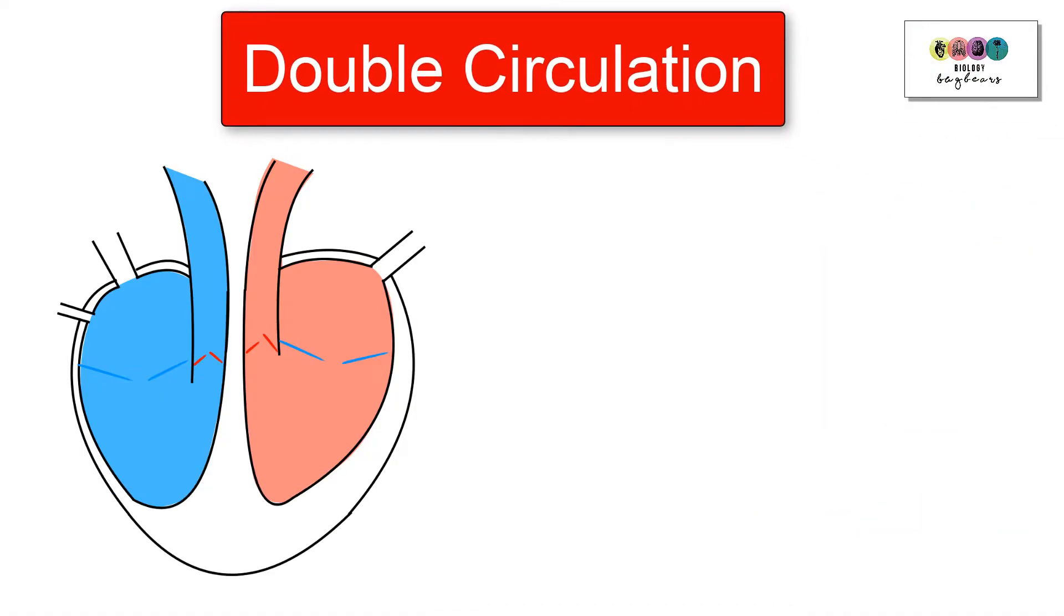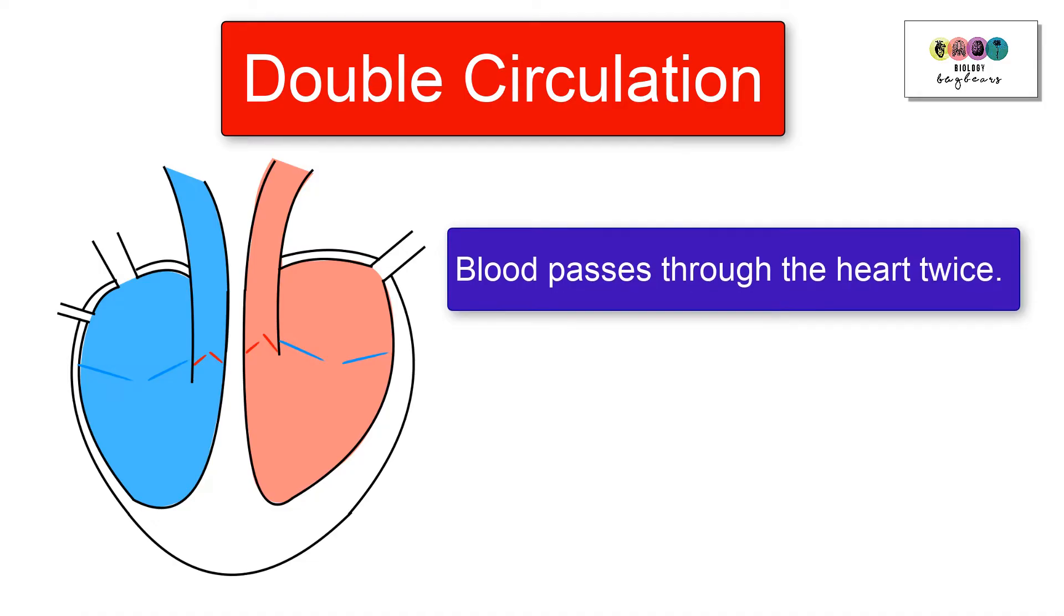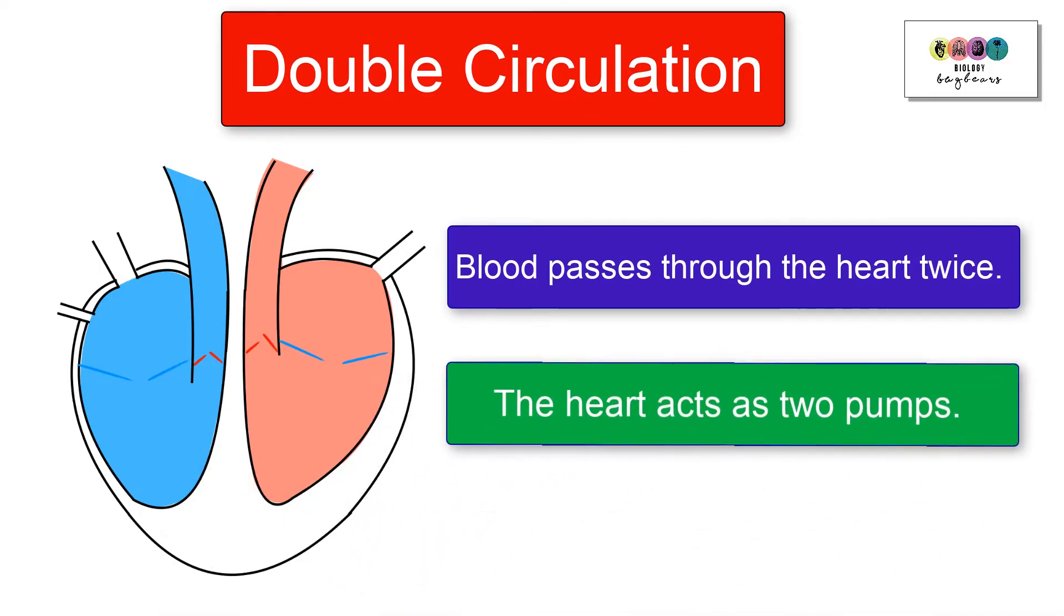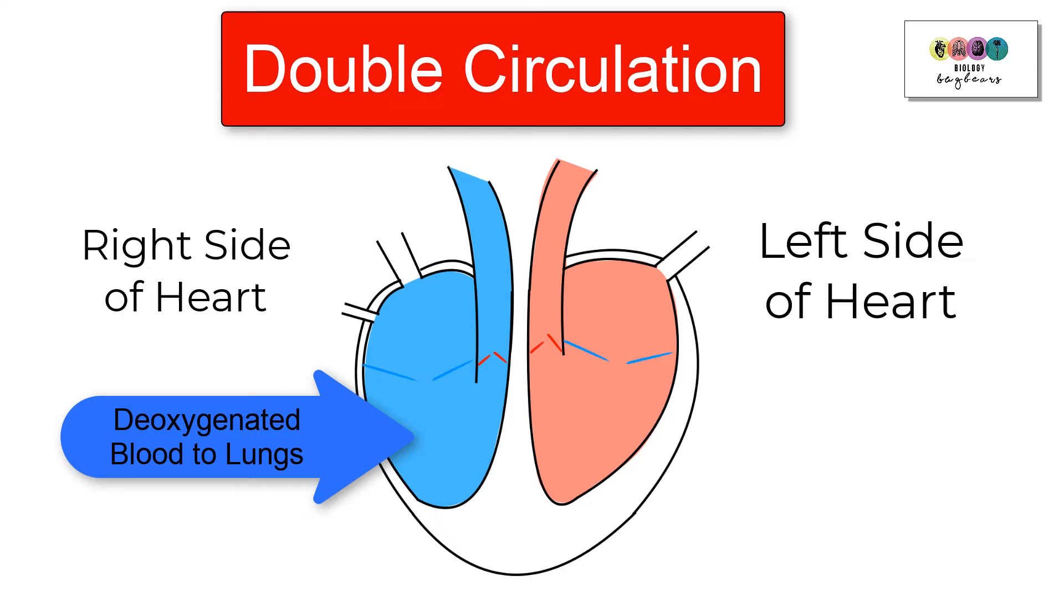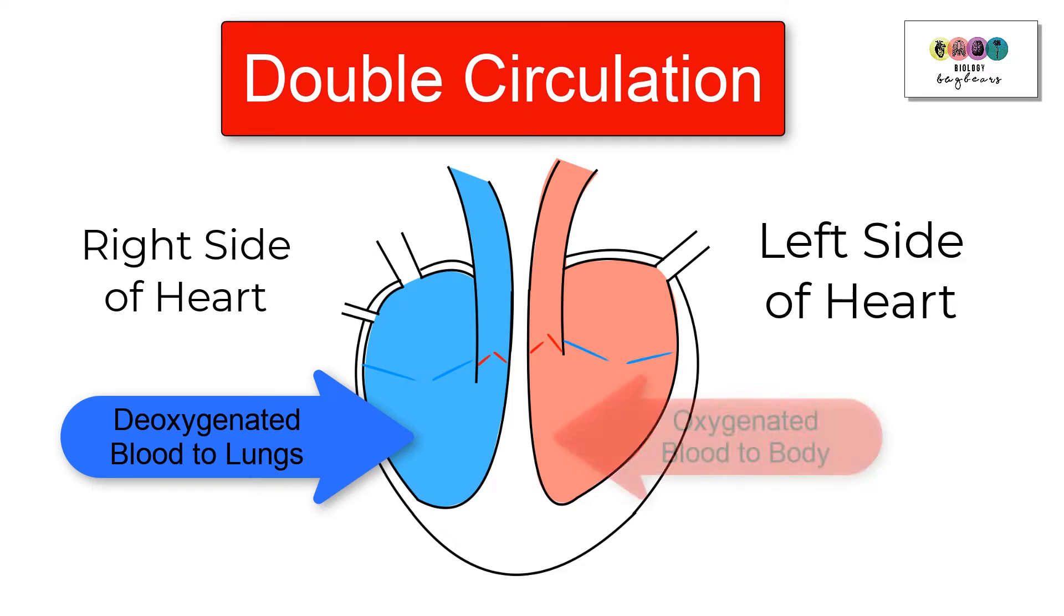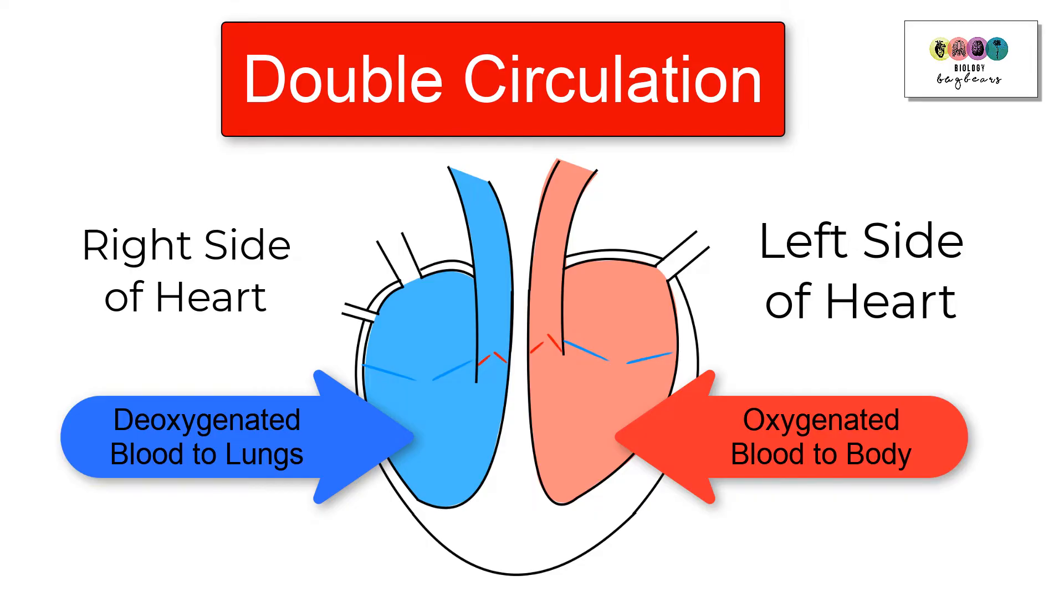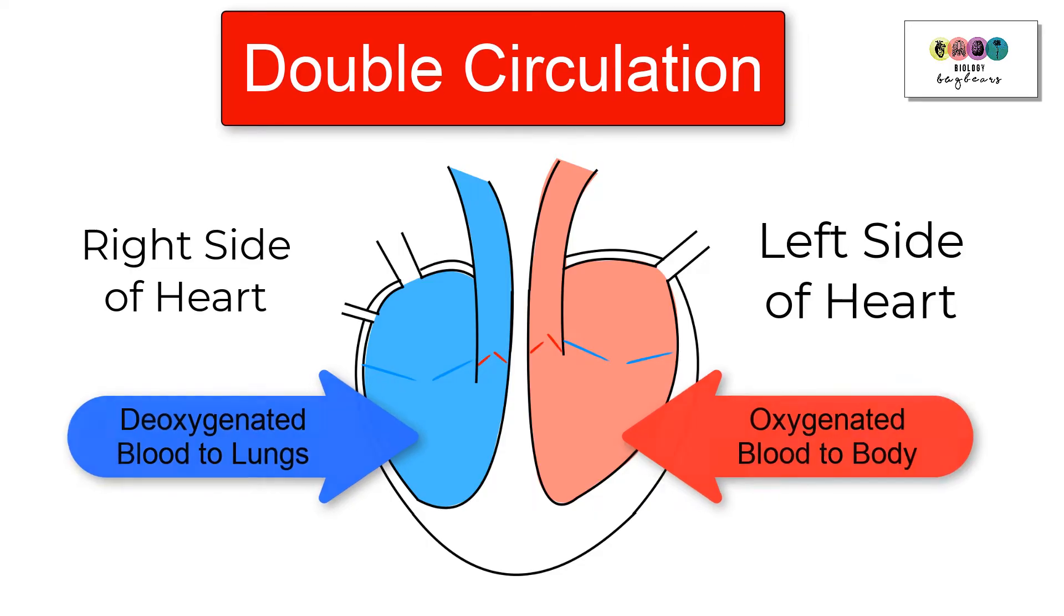This means that the blood passes through the heart twice, so the heart is acting really like two pumps in one. One side of the heart, the right side, is pumping deoxygenated blood to the lungs and the other side, the left side, is pumping oxygenated blood to the body all at the same time.